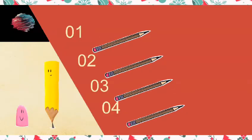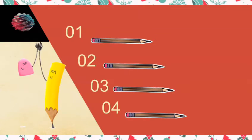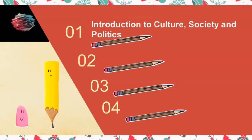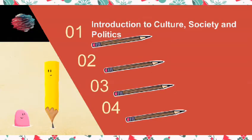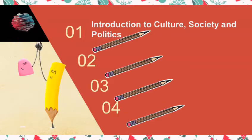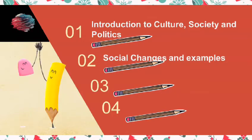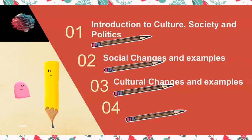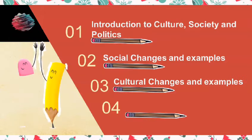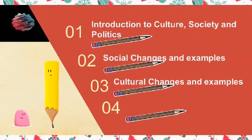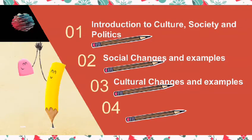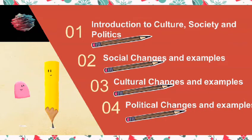Here are our contents. First is the Introduction to Culture, Society, and Politics. Next would be Social Changes and Examples. Third is Cultural Changes and Examples. And the fourth one would be Political Changes and Examples.